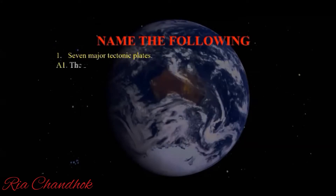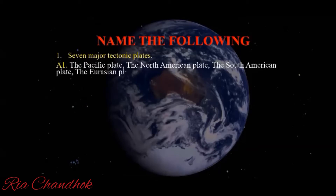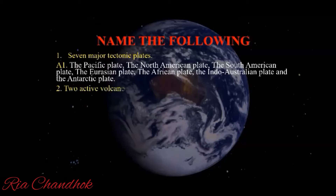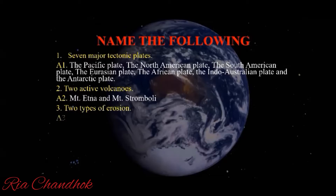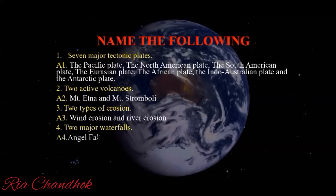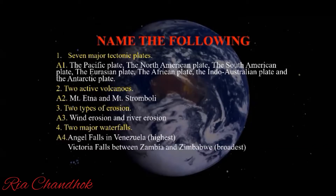Now let's name a few terms. The seven major tectonic plates are: the Pacific Plate, the North American Plate, the South American Plate, the Eurasian Plate, the African Plate, the Indo-Australian Plate, and the Antarctic Plate. The two active volcanoes are Mount Etna and Mount Stromboli. The two types of erosion are wind erosion and river erosion. The two major waterfalls are Angel Falls in Venezuela, which is the highest, and Victoria Falls between Zambia and Zimbabwe, which is the broadest.